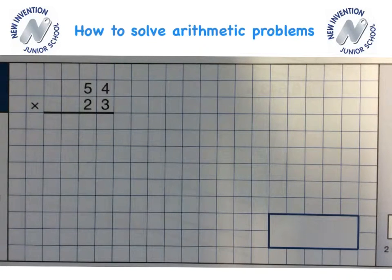In this video I'm going to be showing you how to multiply two two-digit whole numbers. We always start by multiplying the smallest value digit, in this case it's the units column.